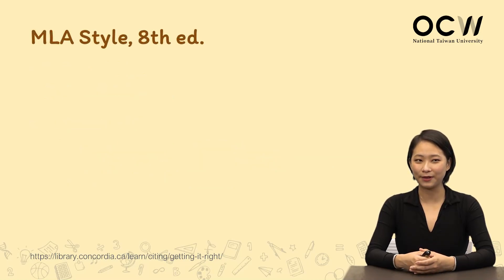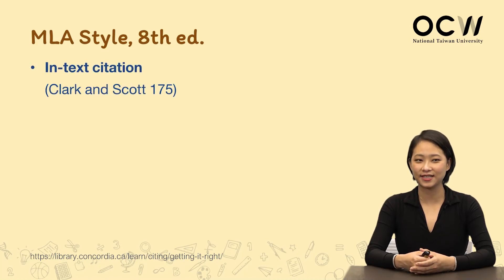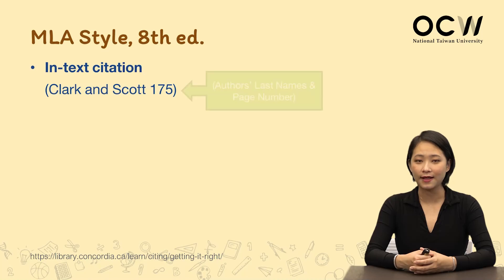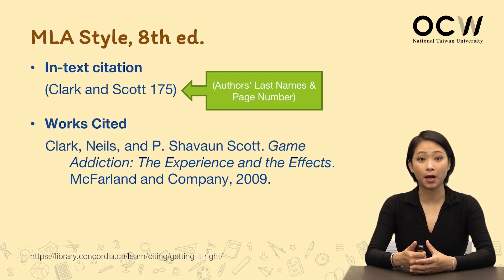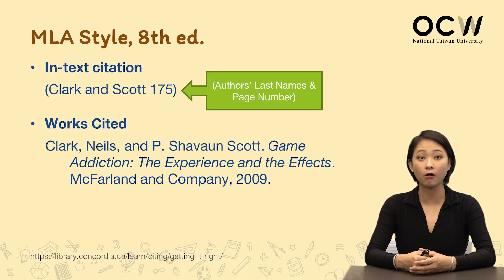Next, let's look at MLA. In terms of in-text citation, it's a little bit different from APA — while we still maintain the last name of the author, rather than the publishing year, now we have the page number. And you can see that in the reference list, it looks a little different as well in terms of how they arrange the publishing year and the title. Different italic size, different capitalization, and where they put commas and periods are all different depending on the citation style you're using.